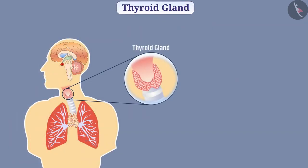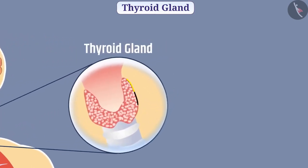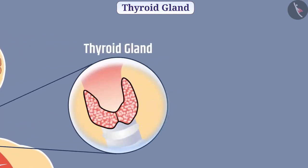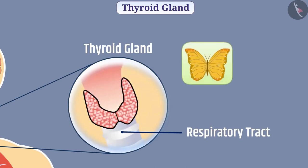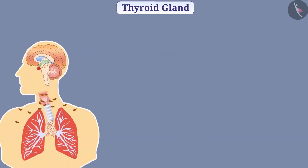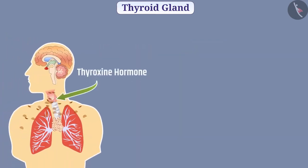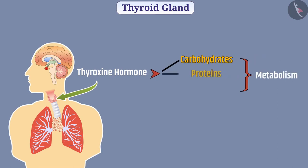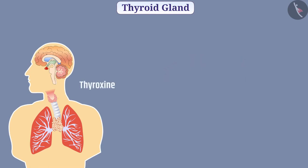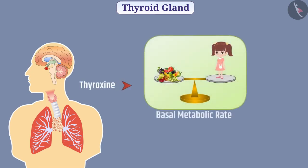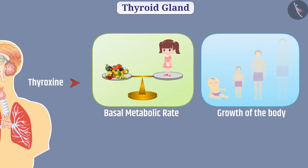The thyroid gland is present in our throat. It is made up of two lobes, each present on either side of the respiratory tract, so the shape of the thyroid gland resembles a butterfly. The thyroid gland synthesizes and secretes thyroxine hormone. Thyroxine controls the metabolism of carbohydrates, proteins, and fat in our body. Therefore, thyroxine mainly helps in the regulation of the basal metabolic rate of the body and provides a suitable balance for the growth of the body.